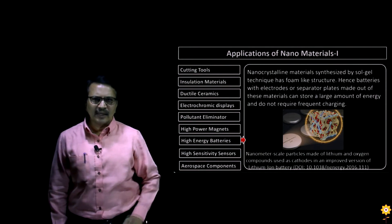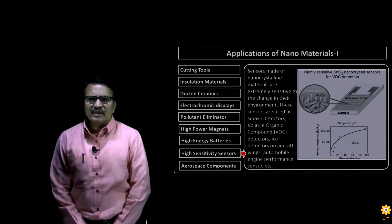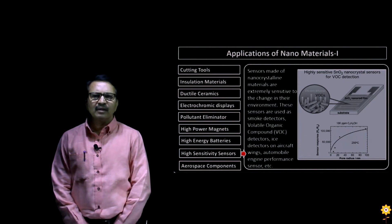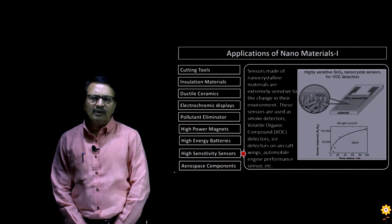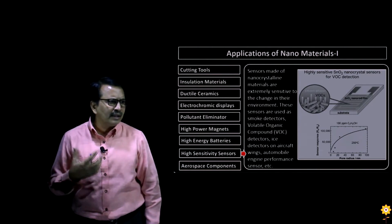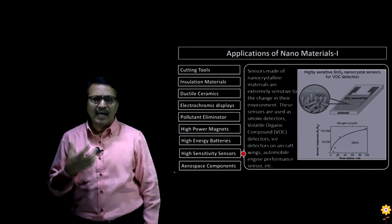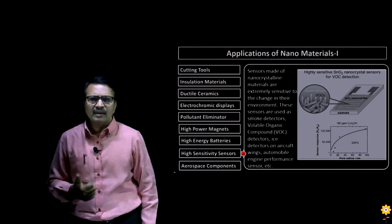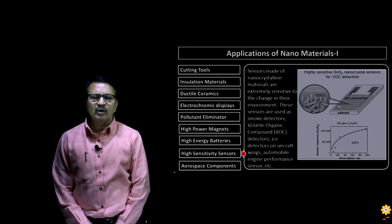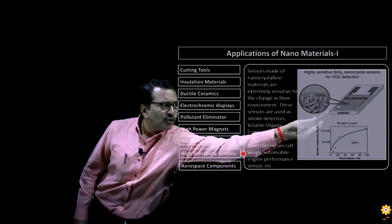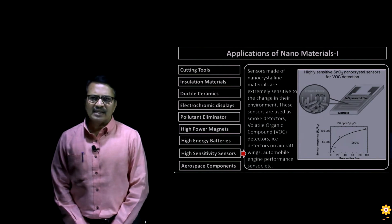Here is one more application of nanomaterials — high sensitivity sensors. Nanomaterials used as sensors are highly sensitive to changes in the surrounding environment, and due to this property they can be used to detect atmospheric pollutants, smoke, volatile organic compounds, ice on spacecrafts and aircrafts, and also as engine performance sensors. Here is an application of a nanocrystalline sensor made out of tin oxide, used for the detection of various volatile organic compounds in the atmosphere.